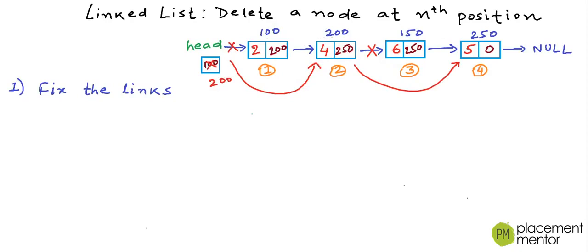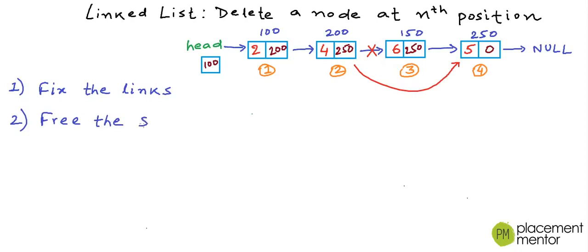Fixing the links is not good enough because all we do is detach the node from the linked list so that it is no more accessible, but it is still occupying space in memory. A node is allocated space from the dynamic memory or the heap section. In C or C++ we have to explicitly free this memory when we are done using it because it is not automatically deallocated. So the second thing we have to do is free the space taken by the node, and that is when the node will actually be deleted from the memory.